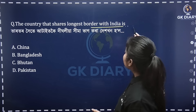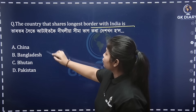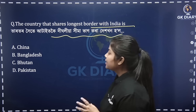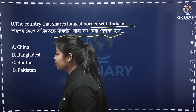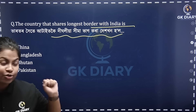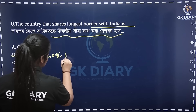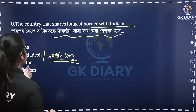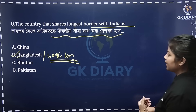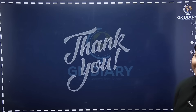The country that shares the longest border with India — the options are China, Bangladesh, Bhutan, and Pakistan. The longest border is Bangladesh, at 4096 km. We have to monitor this.